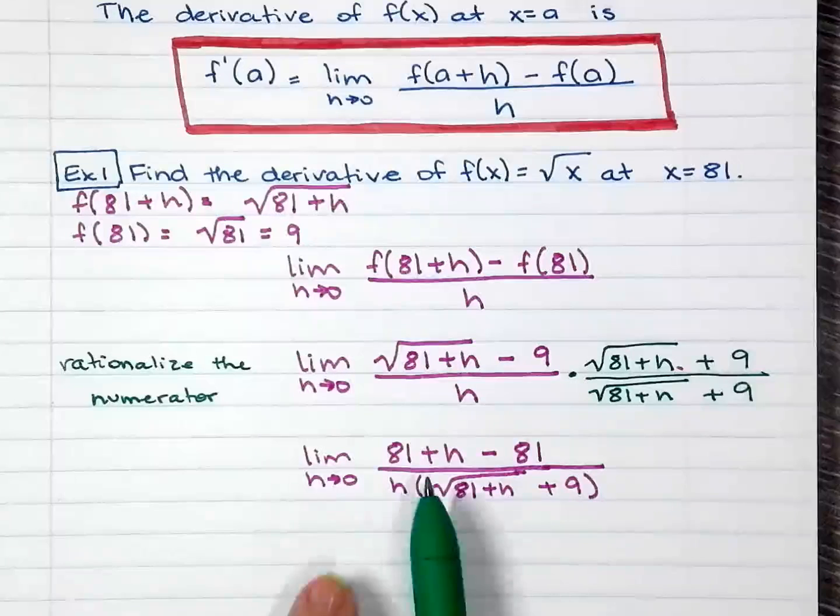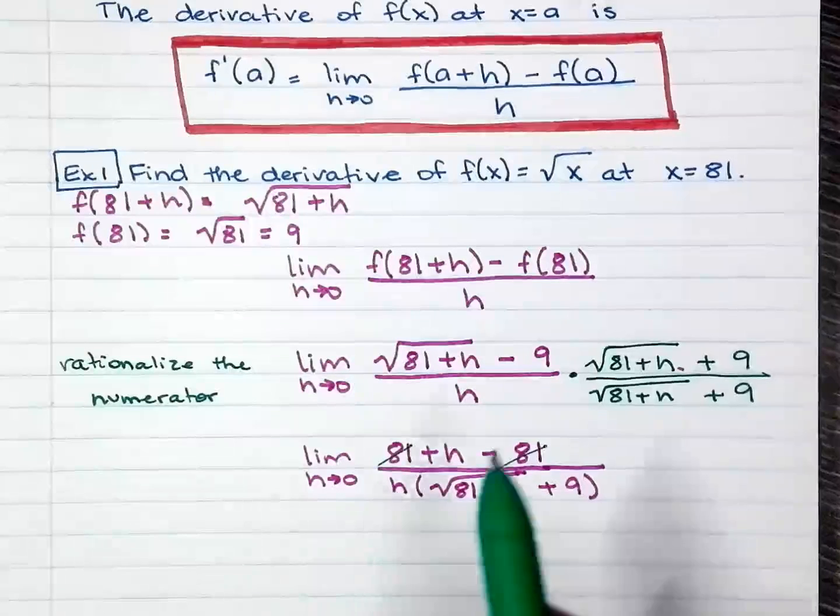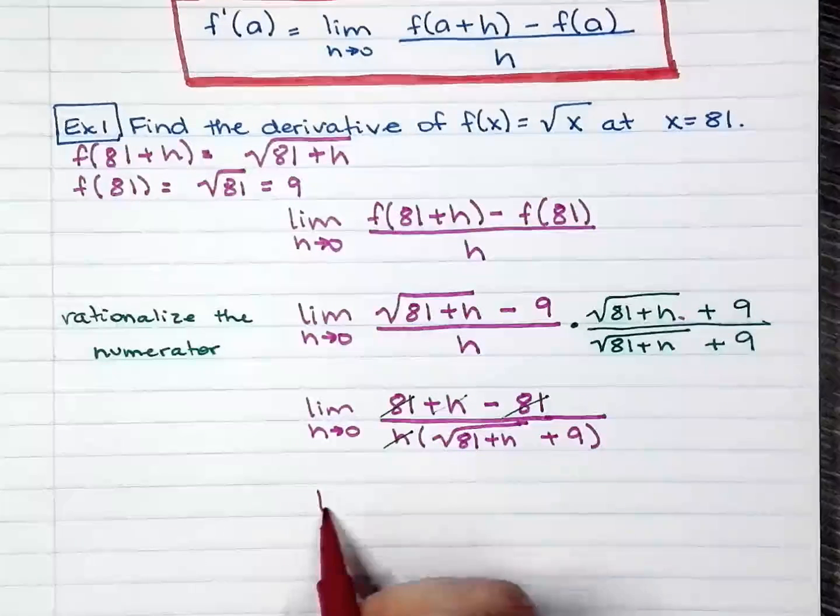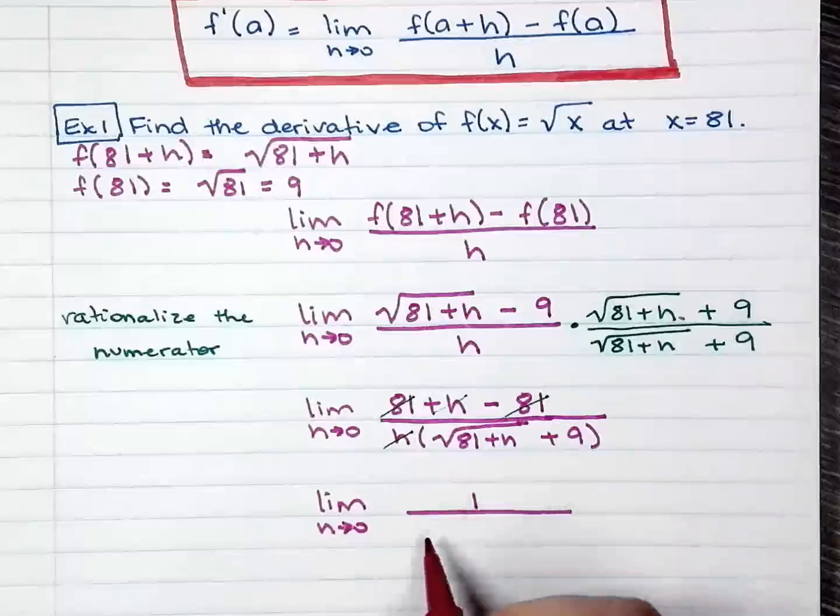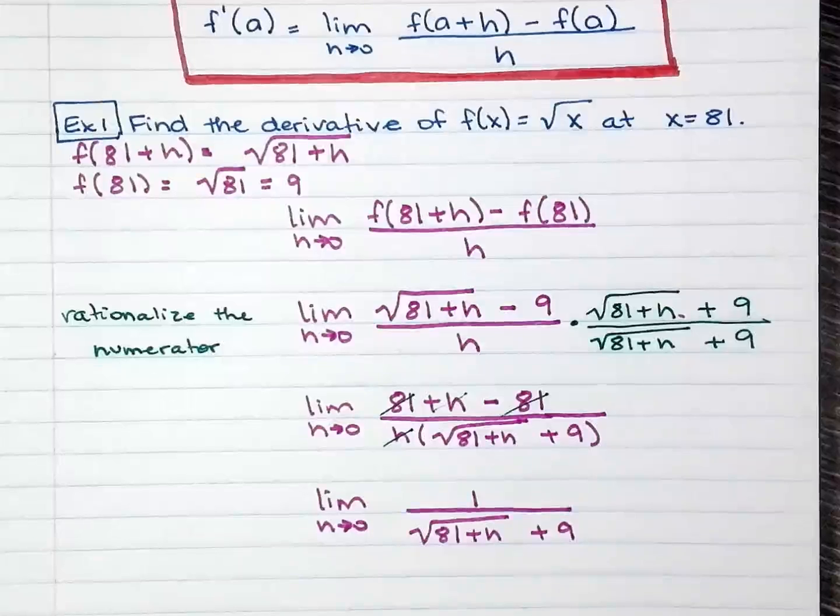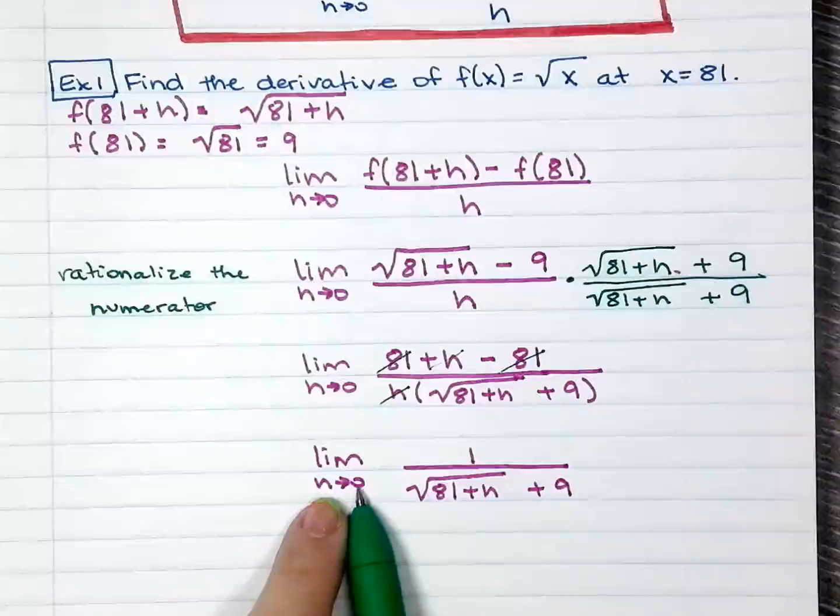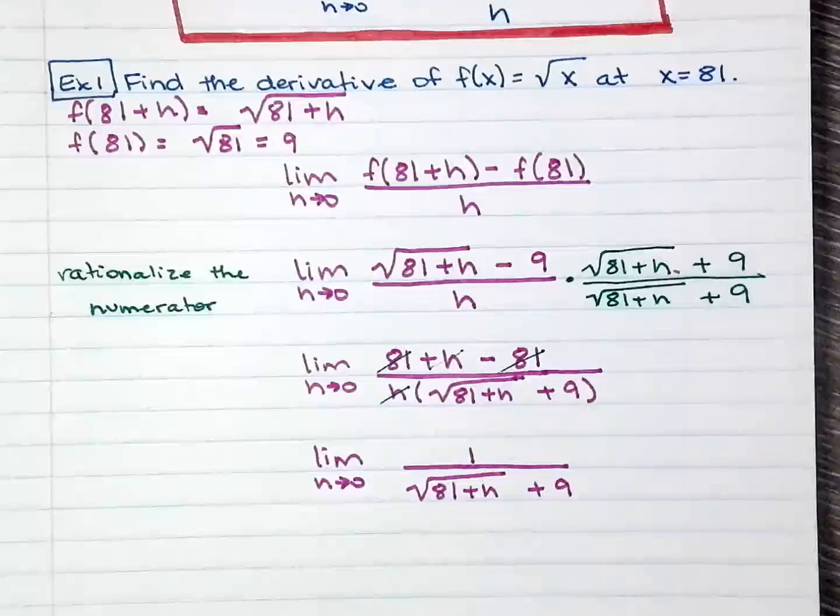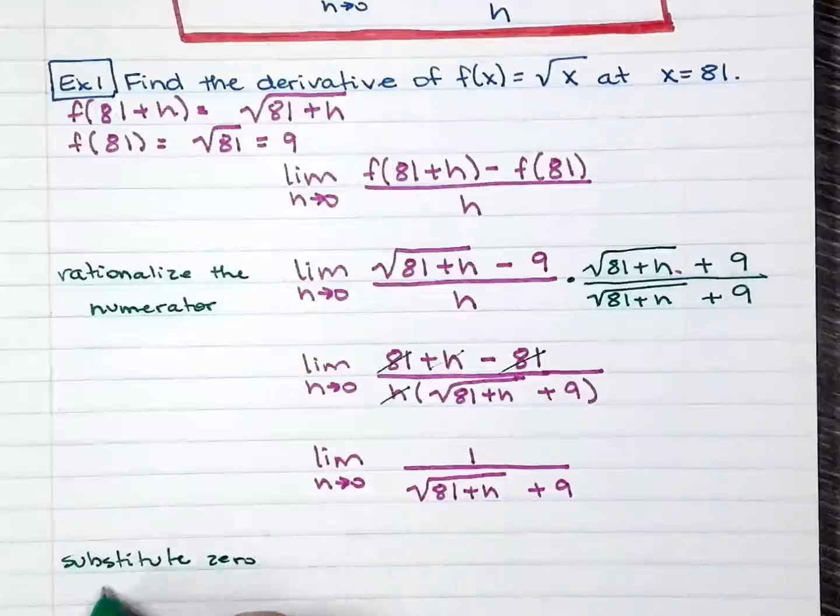Simplify what you can. So 81 take away 81, 0. h divided by h is 1. So you can also simplify that. Let's rewrite it. We're getting somewhere here. So now at this point, I'm ready to go ahead and replace 0 to where h is. So substitute 0 for h.